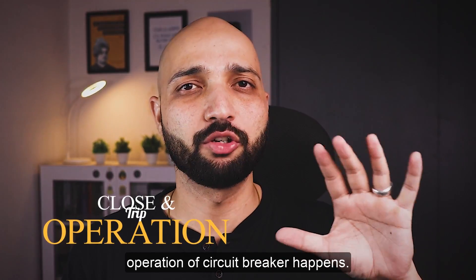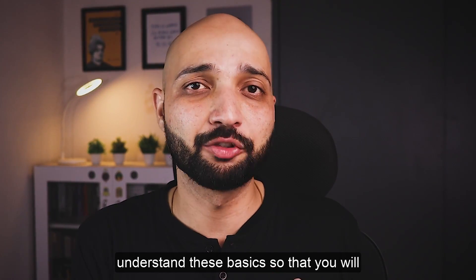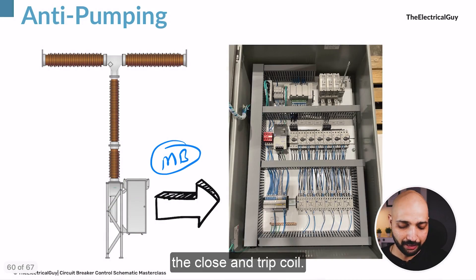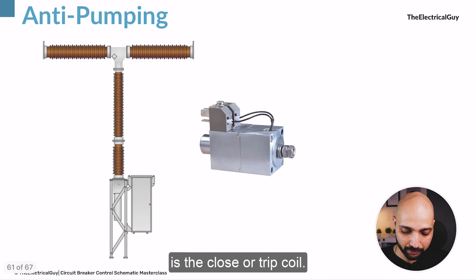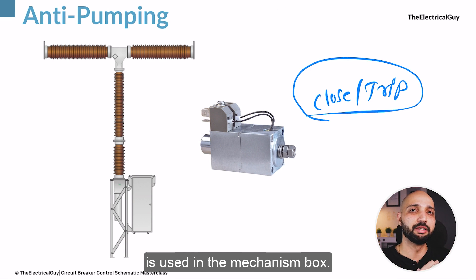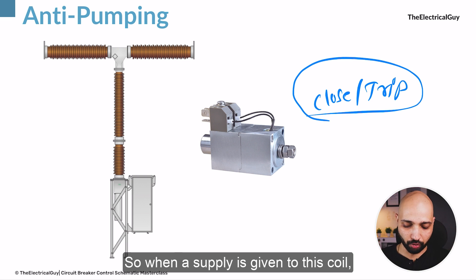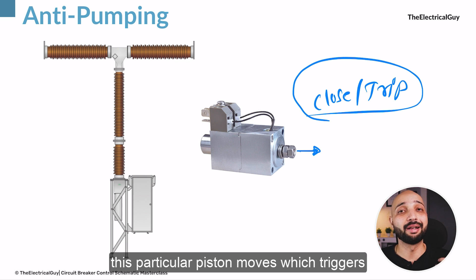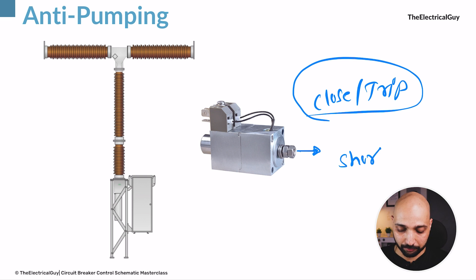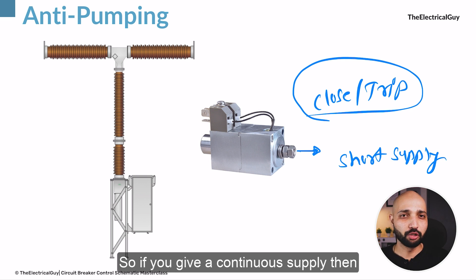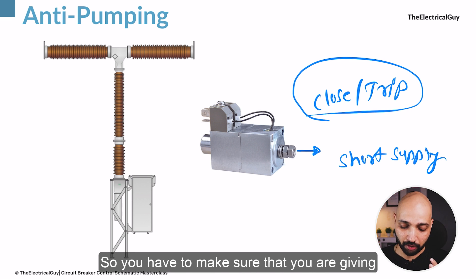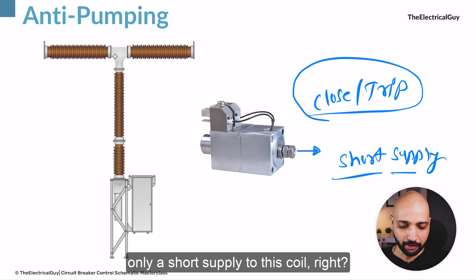Now let us understand how the close and trip operation of the circuit breaker happens — it is really important that you understand these basics so you will understand the dangerous situation of pumping. The close or trip coil is basically a solenoid used in the mechanism box. When a supply is given to this coil, a particular piston moves which triggers the closing or tripping operation. This coil works on a short supply, so if you give a continuous supply it is not good — the coil will burn out.